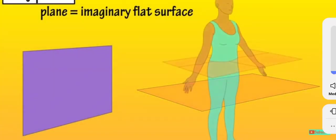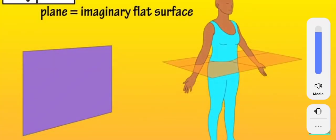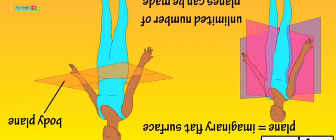Oftentimes the body is sectioned or cut along a surface or plane, which is referred to as a body plane. When a section of the body or organ is cut, it is named after the plane in which it occurs. There are three major body planes: sagittal planes, coronal or frontal planes, and transverse planes.